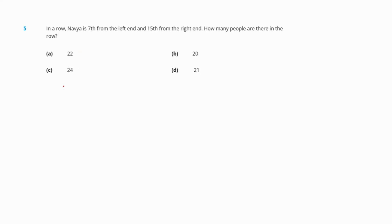Question 5: In a row, Navia is 7th from the left end and 15th from the right end. How many people are there in the row?